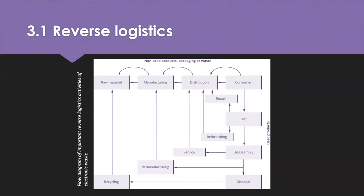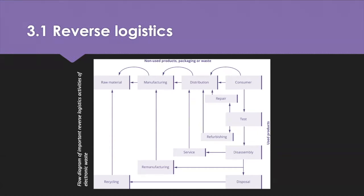Reverse logistics systems can be classified into four types: product recovery systems, reverse logistics systems, product return networks, and enterprise return management systems. Effective reverse logistics systems can lead to improved customer satisfaction, reduced resource investment levels, reduced distribution and storage costs, and a recapturing of value.